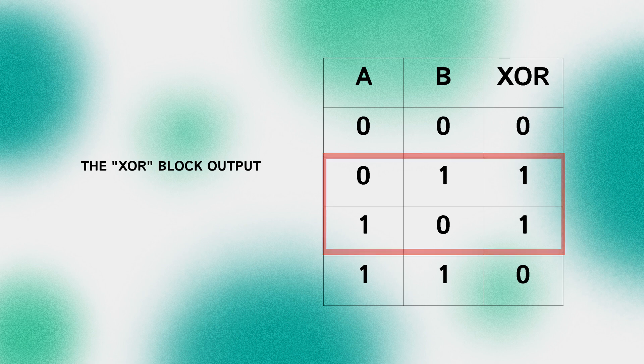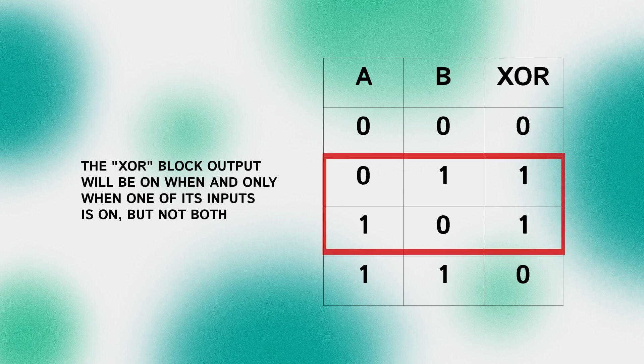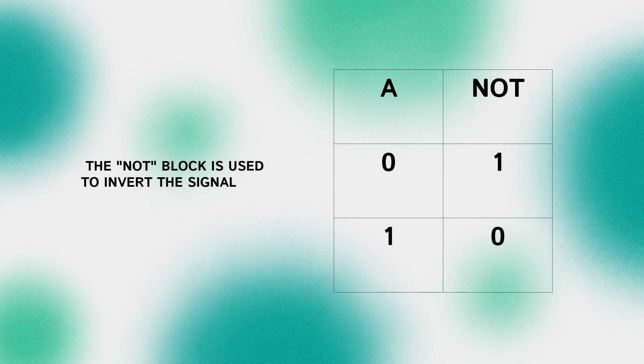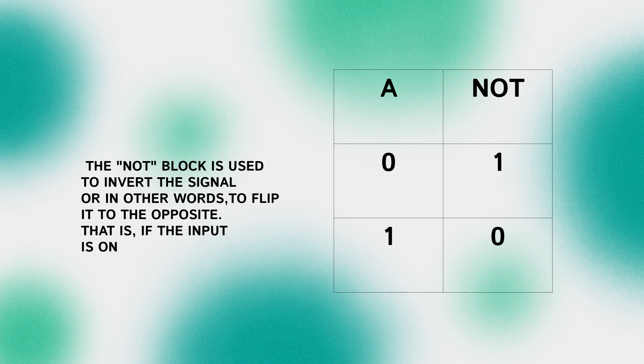The XOR block output will be ON when and only when one of its inputs is ON but not both at the same time. NOT block is used to invert the signal or in other words to flip it to the opposite. That is if the input is ON the output is OFF and vice versa.